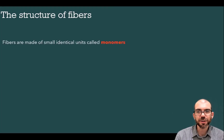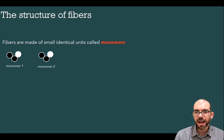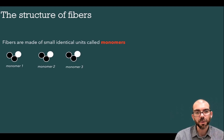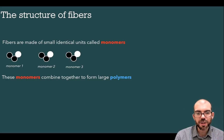Looking at the structure of fibers, fibers are made out of repeating small identical units referred to as monomers. For example, here's one monomer, another monomer, another monomer — they're small units and they're all identical. In this case, I have two black circles attached to one white circle. Fibers are made of monomers because these monomers can combine together to form large objects called polymers.